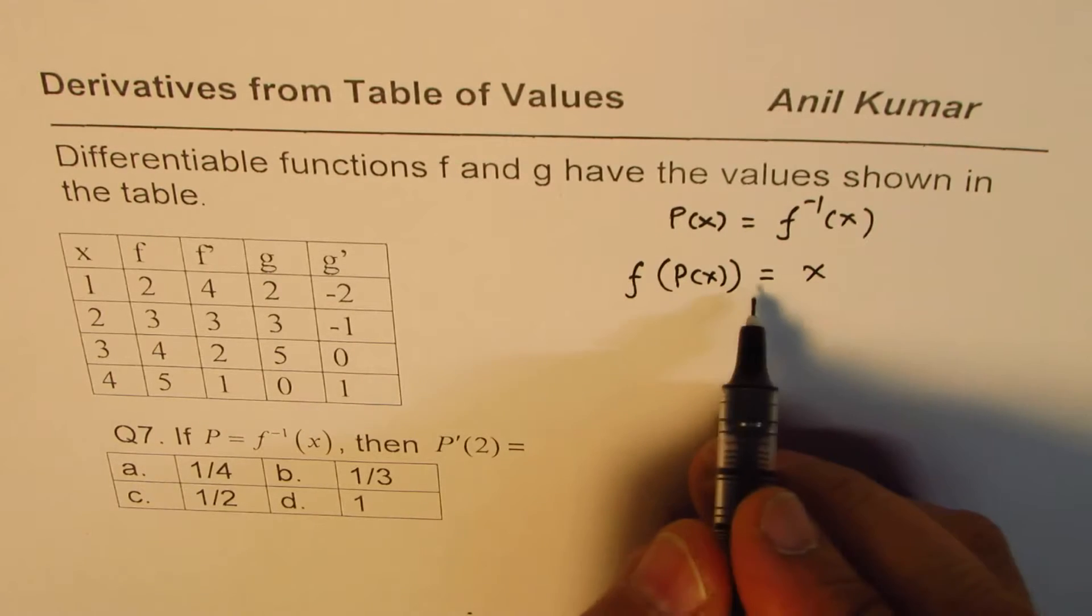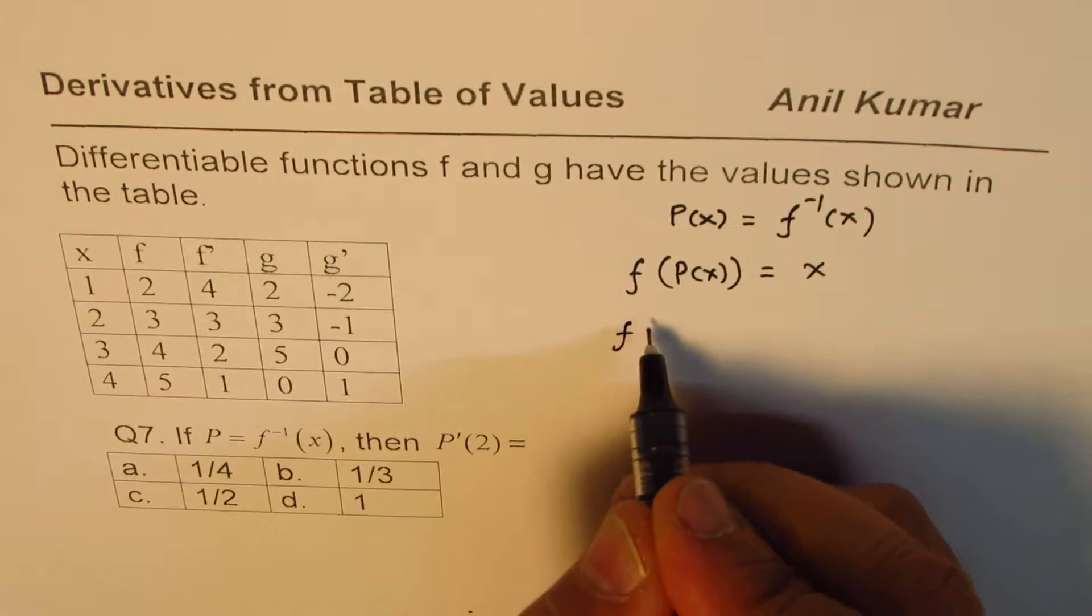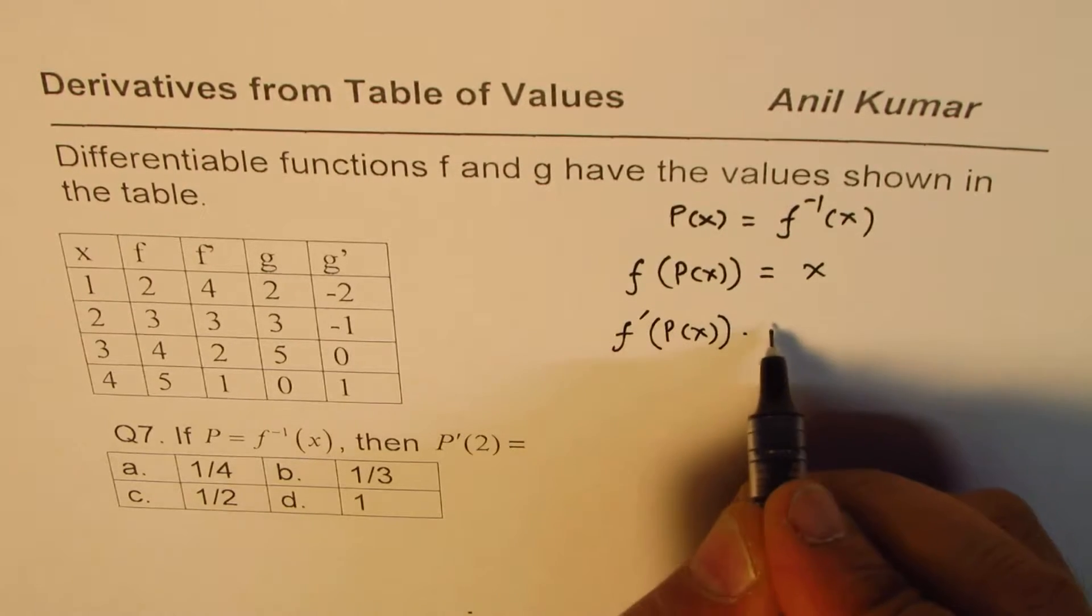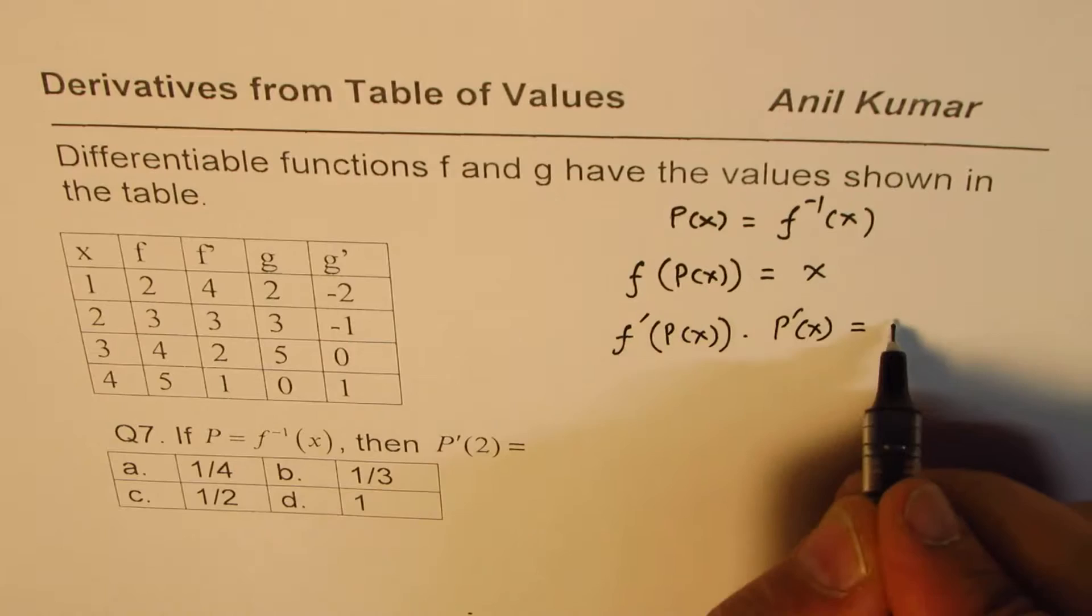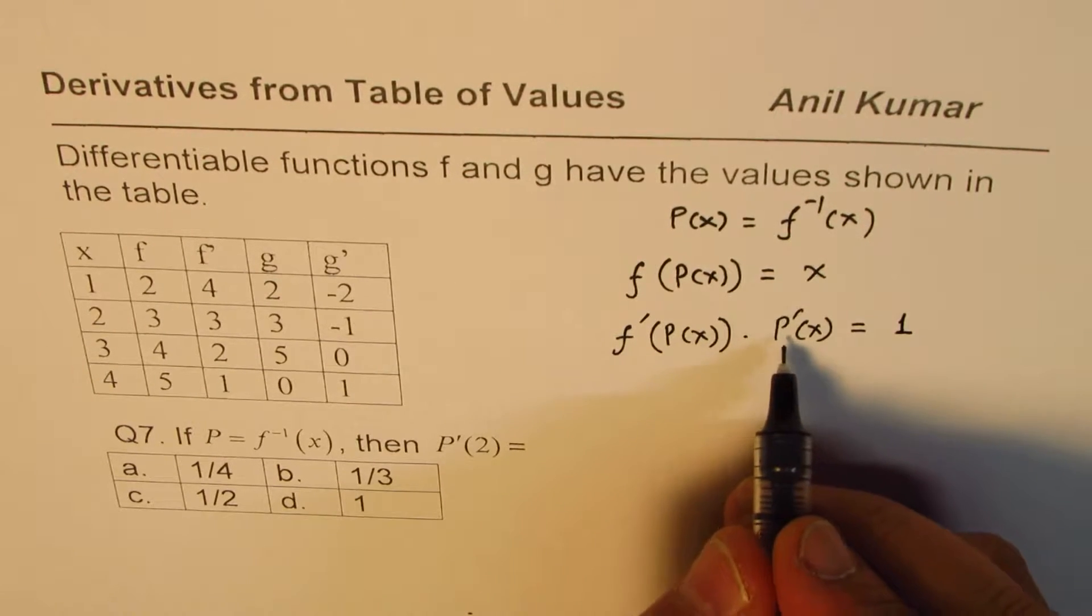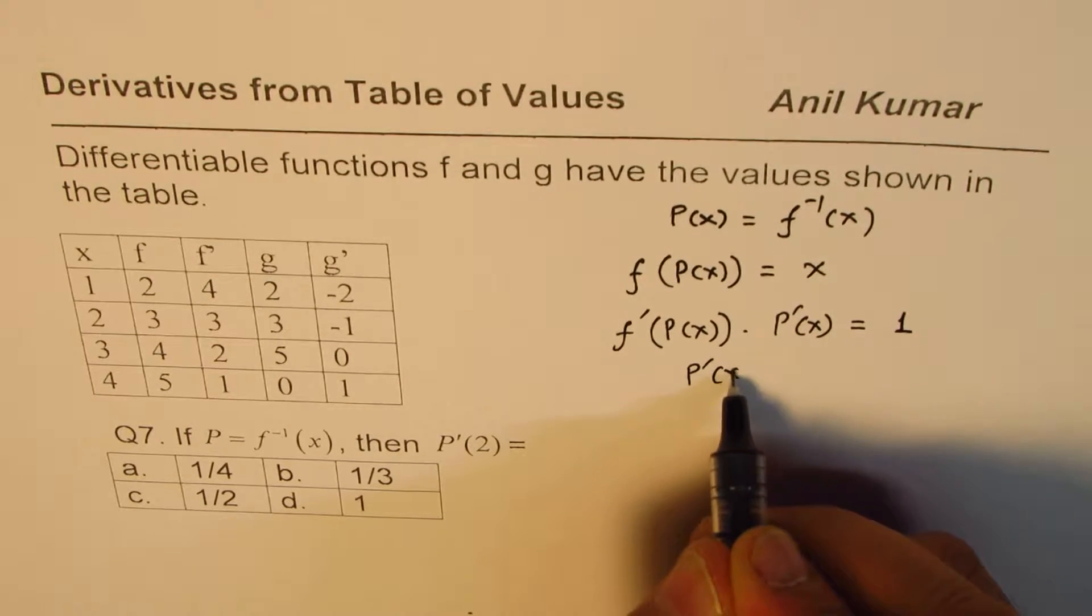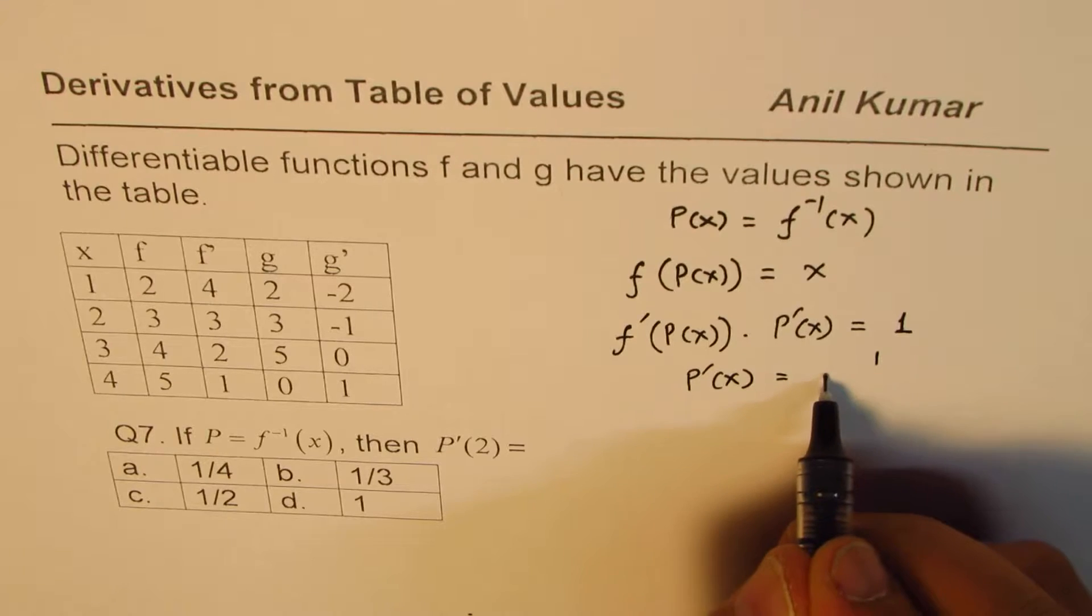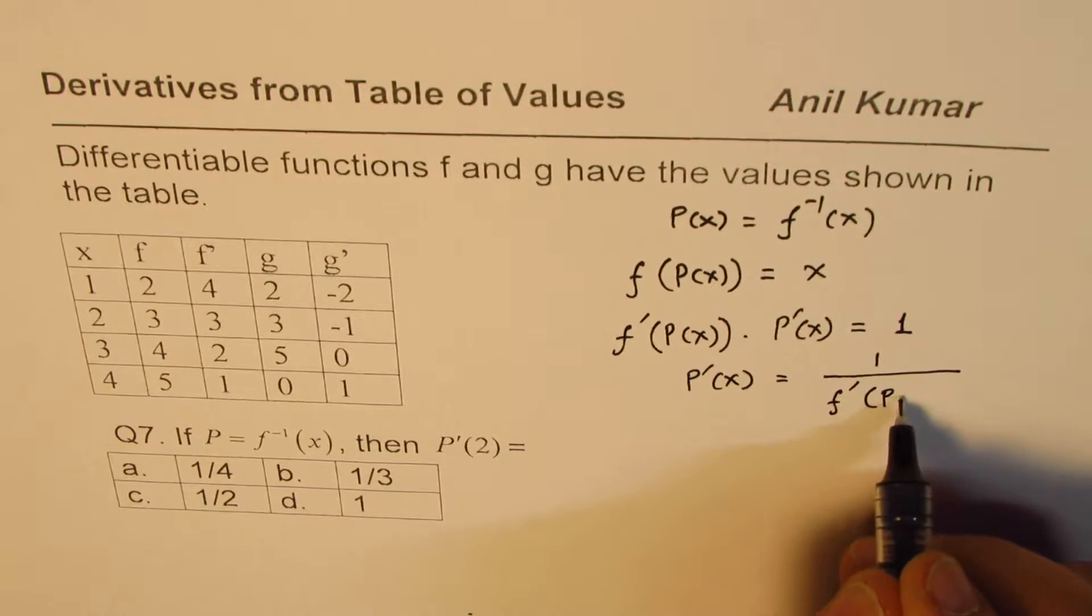Now, if you take the derivative on both sides, then you get f dash of p of x times derivative of p of x equals to 1. Now, from here, we can isolate p prime x, which equals 1 over f dash of p of x.